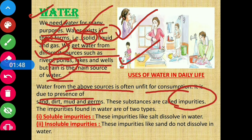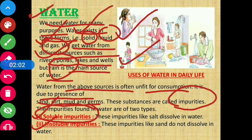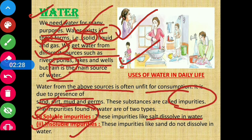Now impurities are of two types: soluble impurities and insoluble impurities. Soluble impurities are those which dissolve in water — like salt dissolves in water. If there is too much salt dissolved in our water, we have to first remove it before we can consume it. Insoluble impurities are those which do not dissolve in water, such as sand — sand does not dissolve in water, so it is an insoluble impurity.